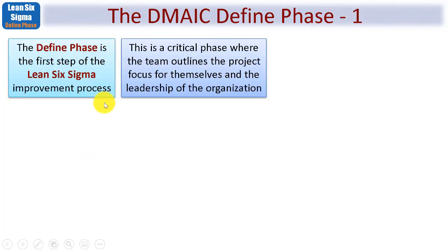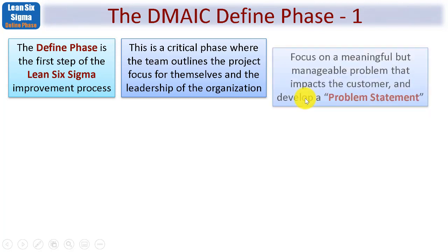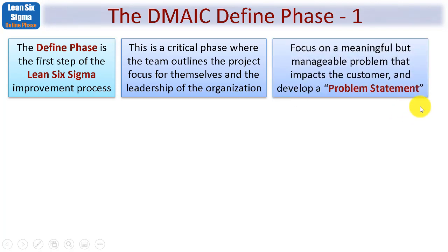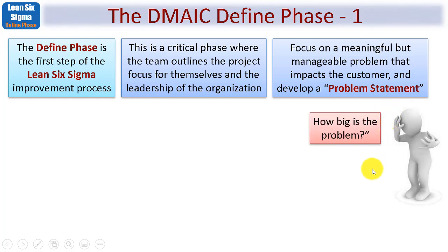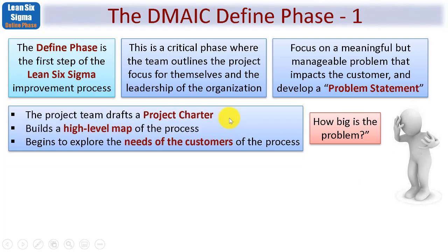The Define Phase is the first step of the Lean Six Sigma improvement process. This is a critical phase where the team outlines the project focus for both themselves and leadership. The focus is on a meaningful but manageable problem that impacts the customer, and from that we develop what's known as a problem statement. An obvious question here is: how big or how severe is the problem?